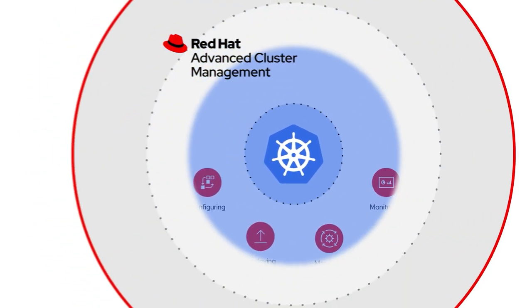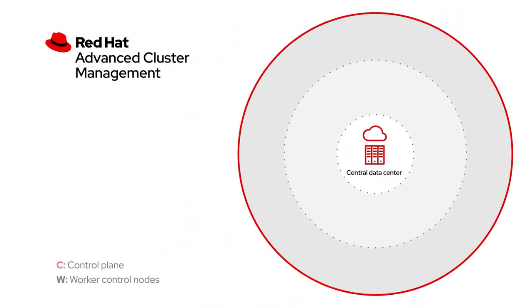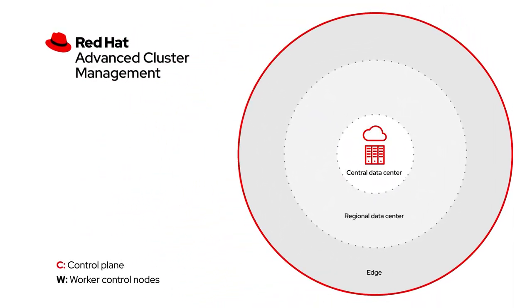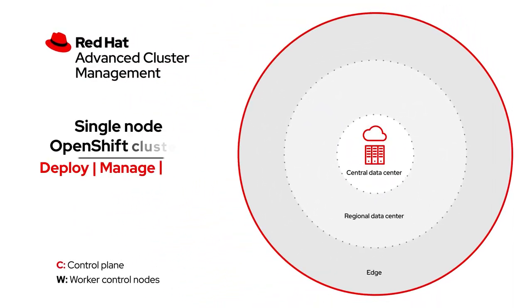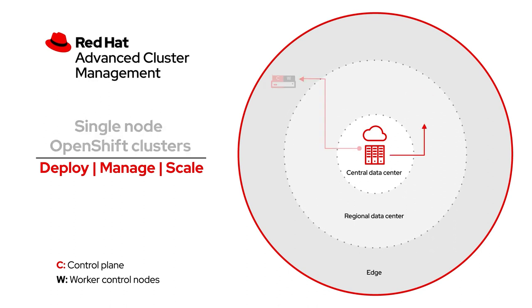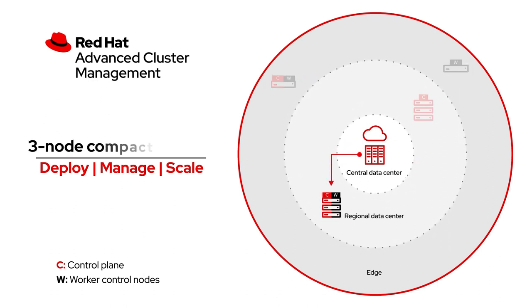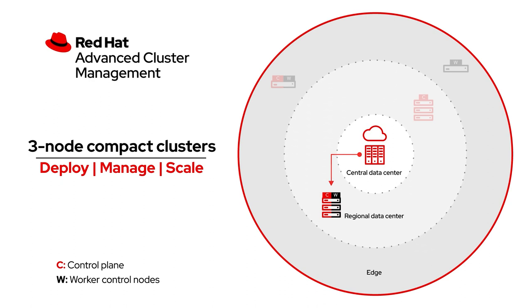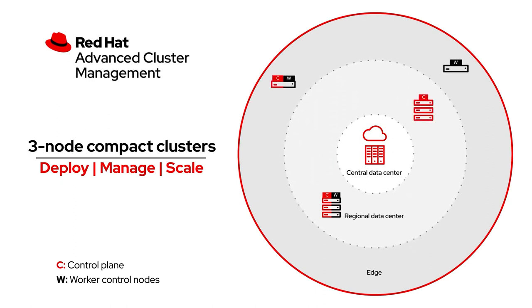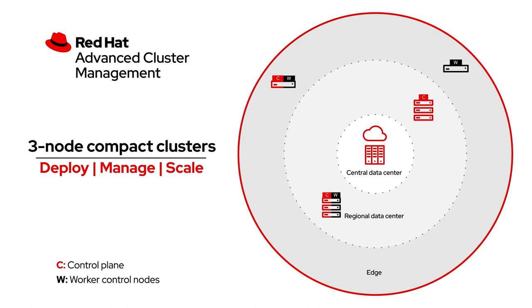Red Hat Advanced Cluster Management can manage all OpenShift edge topologies, including single-node OpenShift clusters, remote worker nodes, and three-node compact clusters, so you can easily deploy, manage, and better secure your clusters at scale in an automated way.